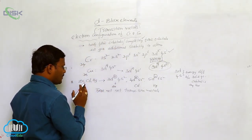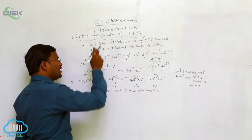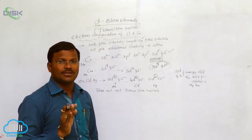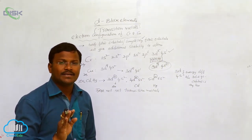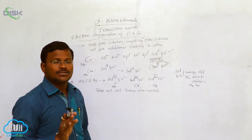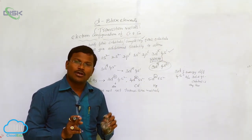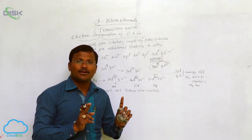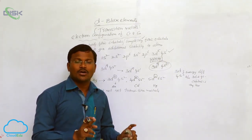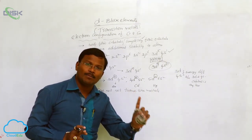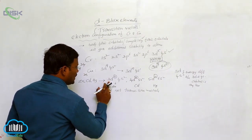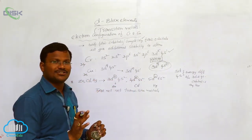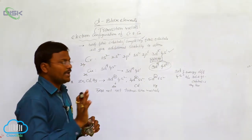We study the properties of zinc, cadmium, and mercury under transition metals, but they are not transition metals or transition elements — they are d-block elements. All d-block elements are not transition elements, but all transition elements are d-block elements. Due to completely filled d-orbitals, zinc, cadmium, and mercury are not transition elements, but they are d-block elements.